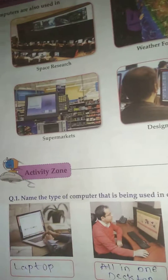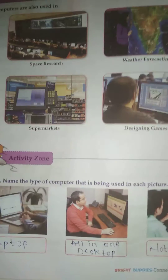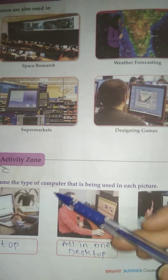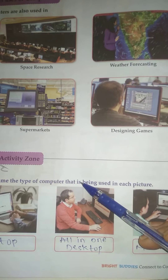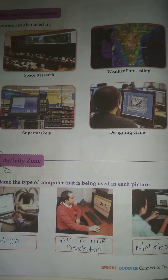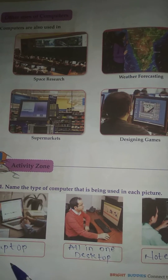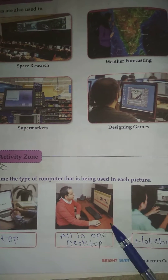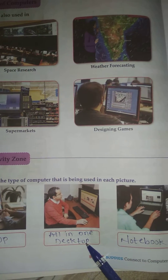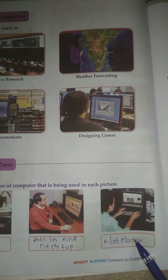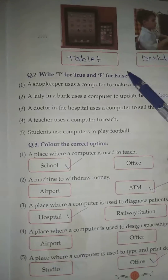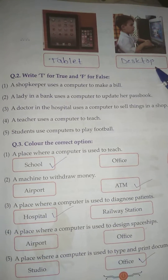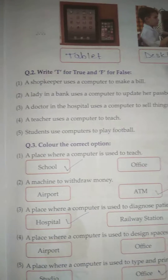Activity Zone, Question No. 1: Name the types of computer that is being used in each picture. Laptop, All-in-One Desktop, Notebook, Tablet, Desktop Computer.